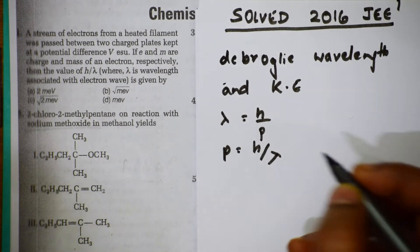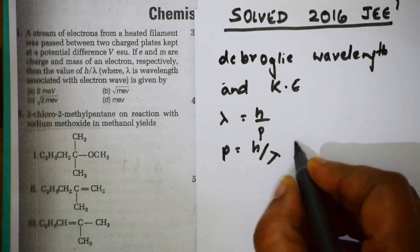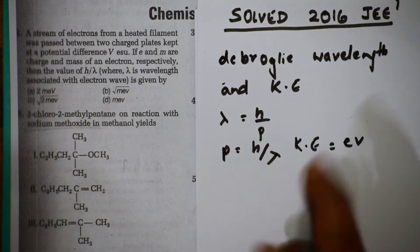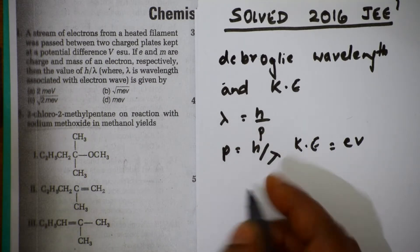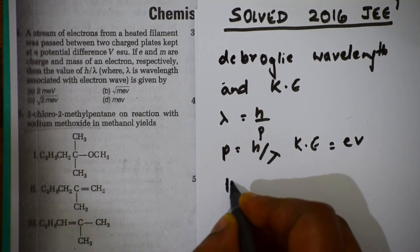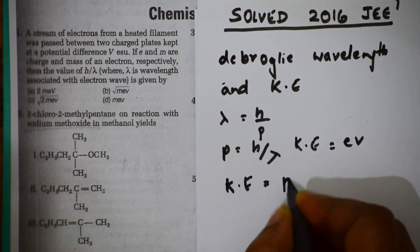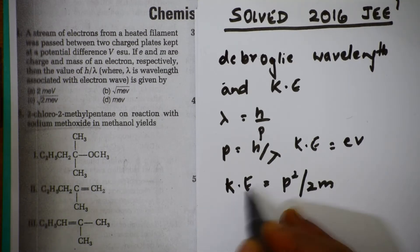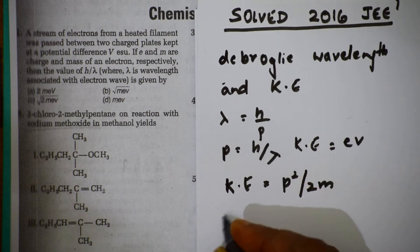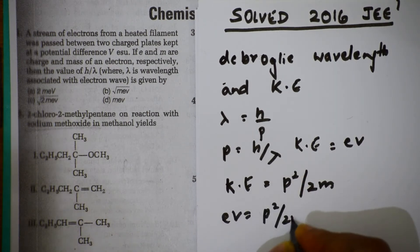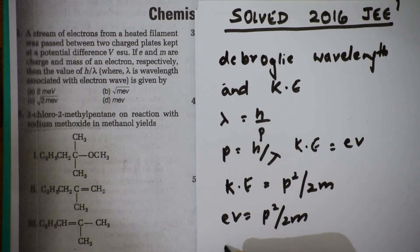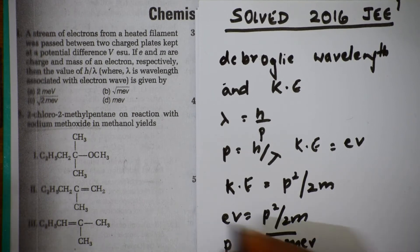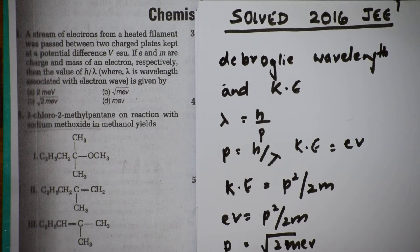For kinetic energy of an electron, we write E × V. We also know kinetic energy = P²/2m. Relating both: EV = P²/2m. Solving for P: P = √(2mEV). So H/λ, which equals P, is therefore √(2mEV).